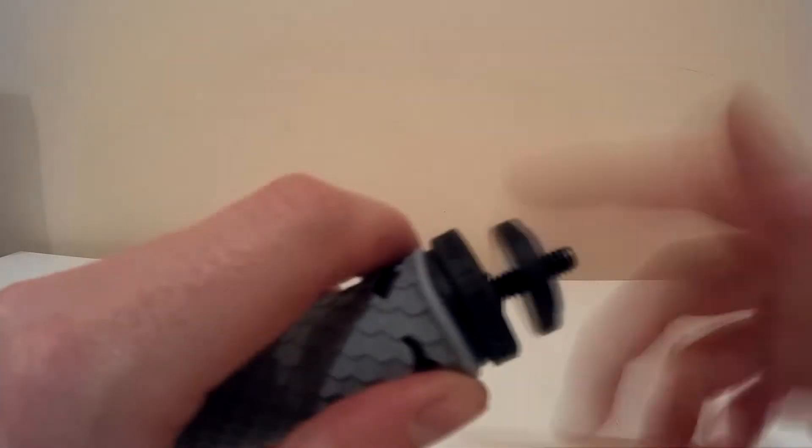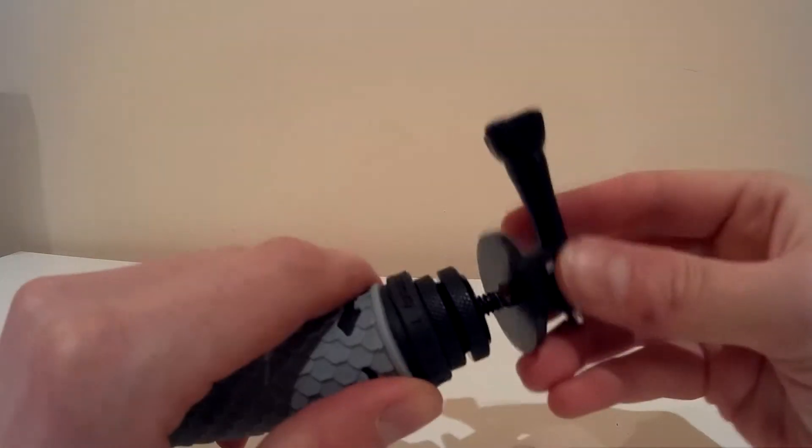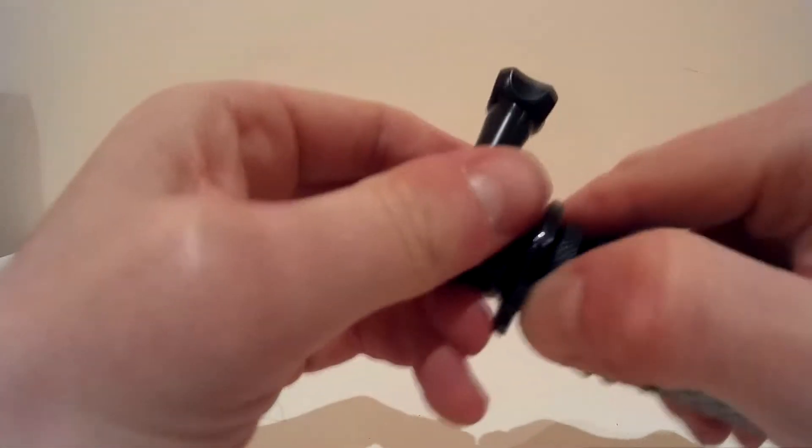So we remove the string. It's already quite secure in there but we'll secure it further using one of the nuts. We just screw that on. We then add on the second nut and the tripod mount. We then twist the top nut back onto the tripod mount to secure it nice and tight.